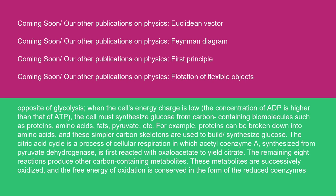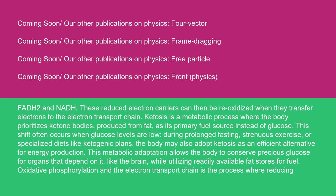The citric acid cycle is a process of cellular respiration in which acetyl coenzyme A, synthesized from pyruvate dehydrogenase, is first reacted with oxaloacetate to yield citrate. The remaining eight reactions produce other carbon-containing metabolites. These metabolites are successively oxidized, and the free energy of oxidation is conserved in the form of the reduced coenzymes. These reduced electron carriers can then be re-oxidized when they transfer electrons to the electron transport chain.